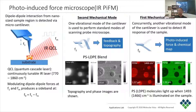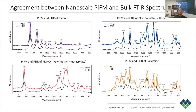At a fixed excitation wave number, PIFM generates a map of absorption strength for dielectric materials at that wave number. At a fixed location, the laser can be tuned across a spectral range to generate a PIFM spectrum, which correlates well with the bulk FTIR spectrum, provided the sample has no nanoscale inhomogeneity.